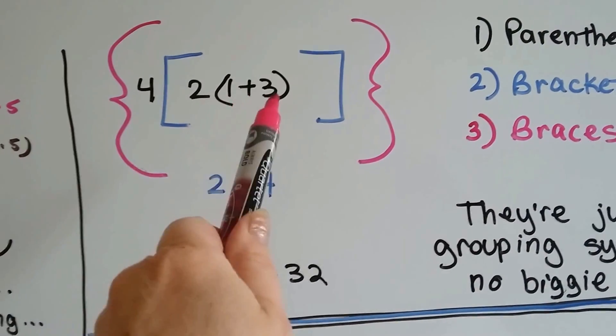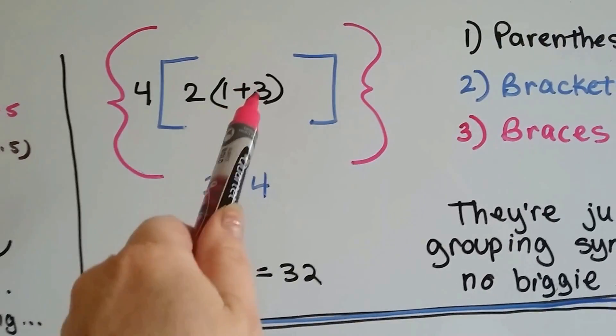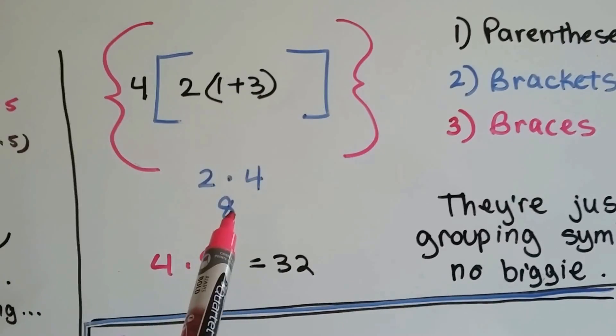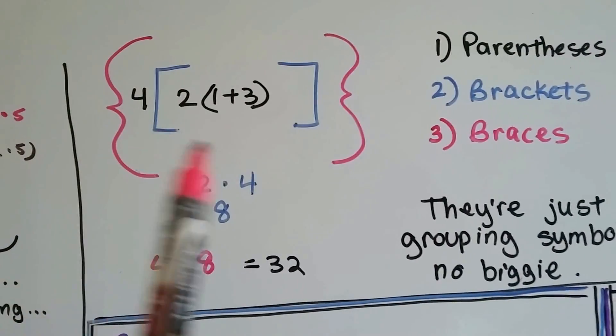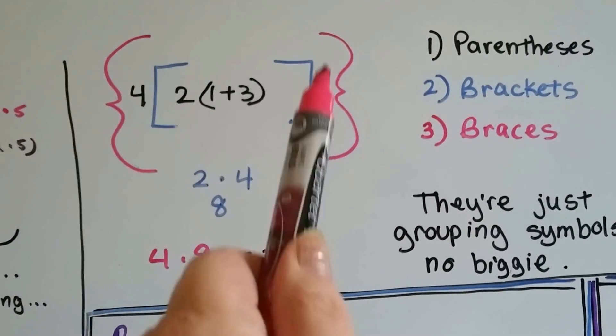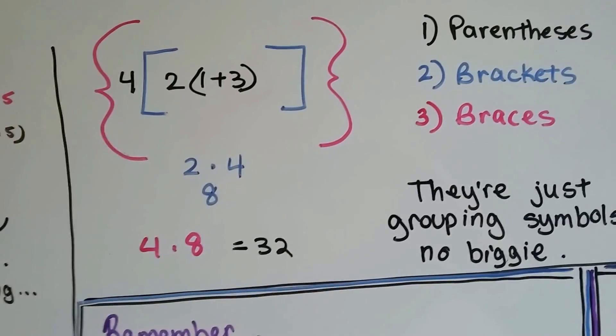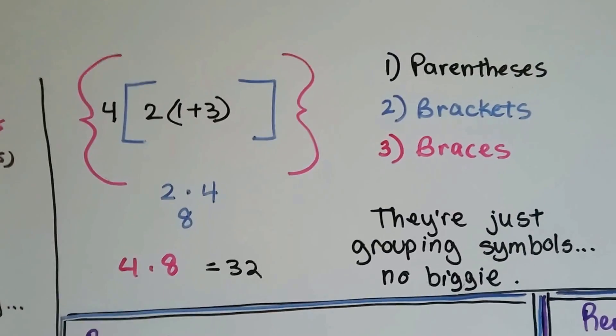Inside the parentheses, we've got 1 plus 3. And we know that's 4. Now, we did inside the parentheses, now we're going to do inside the brackets. That's 2 times the 4. That's 8. Now, we did everything inside the brackets, now we're going to move to the outside of the brackets, which is the braces. 4 times 8 is 32.